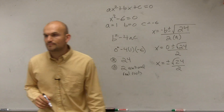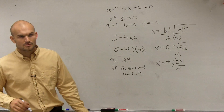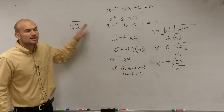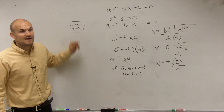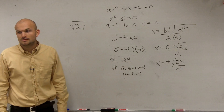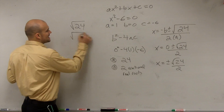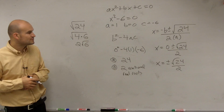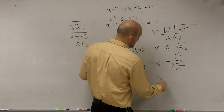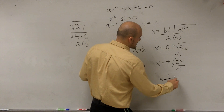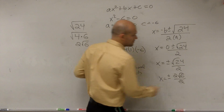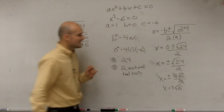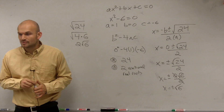Can we simplify the square root of 24? We can't take the square root of 24 directly, but is there a number you can take the square root of that divides into 24? Yes — 4. So we can break this down into 4 times 6, and rewrite it as 2 radical 6. Therefore, x equals plus or minus 2 radical 6 over 2. Then the 2's divide out, and x equals plus or minus the square root of 6.